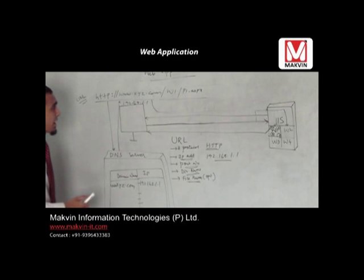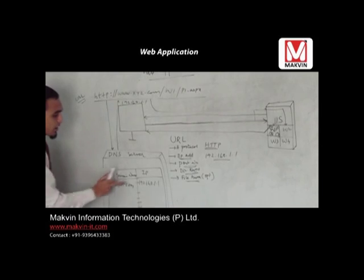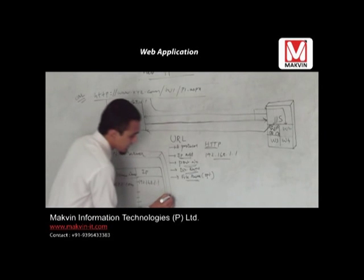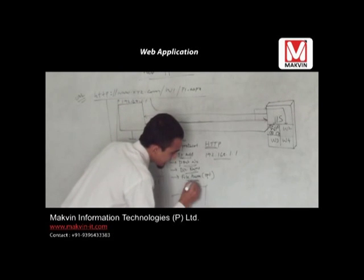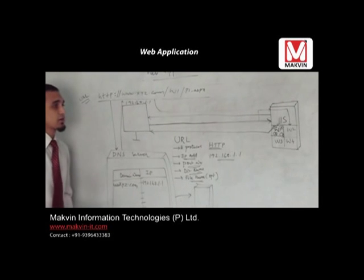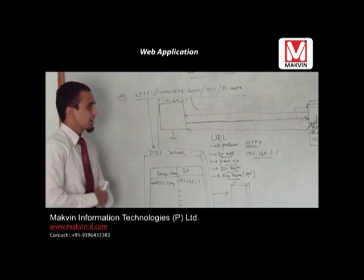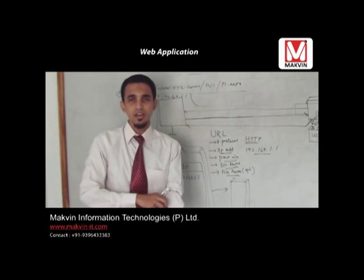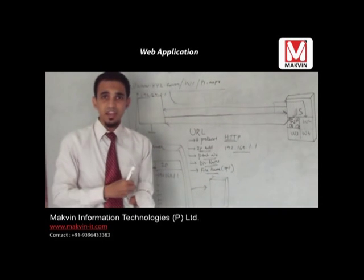With the help of this IP address, the request goes to the server. Whenever we type a URL, it tries to resolve the domain name to the IP address. If it does not find the domain name on this server, it searches on some other server. Unless and until it gets the IP address, it is not going to reach the server. That is why, whenever you write a URL for the first time, it takes a little time.